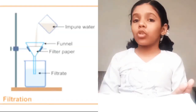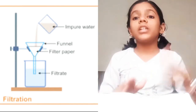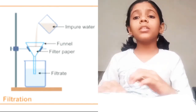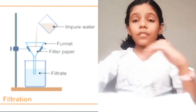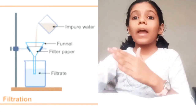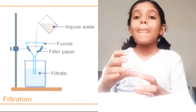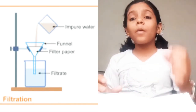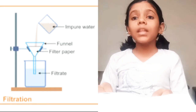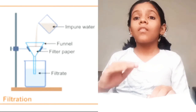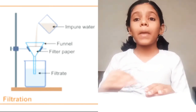Now let's talk about the second method, which is called filtration. Take a filter paper, fold it into a half circle and then into a quarter circle. Put three folds at one side and the fourth fold at the other side. Keep the filter paper in a funnel and put the funnel in another glass. Take the impure water and put it in the funnel. The pure water will come inside the glass and all the impurities will settle down in the filter paper.